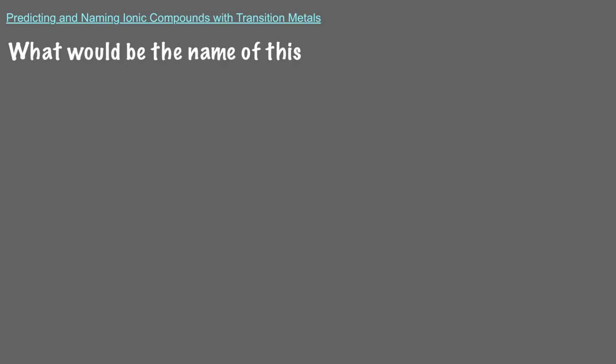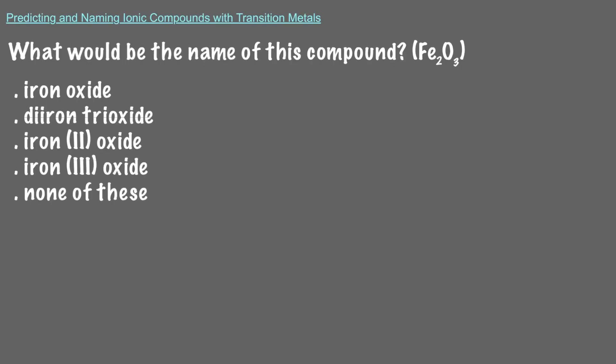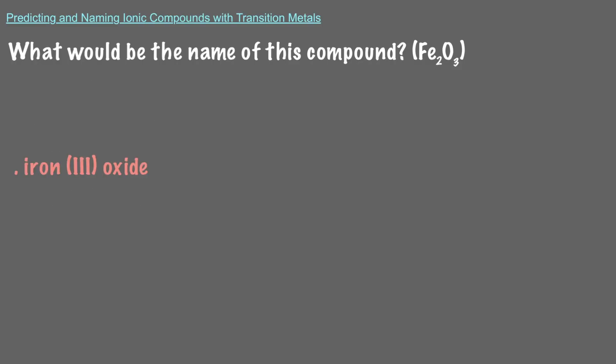What would be the name of this compound? Exactly, since our iron cation has a positive 3 charge, the name of the compound is iron (III) oxide.